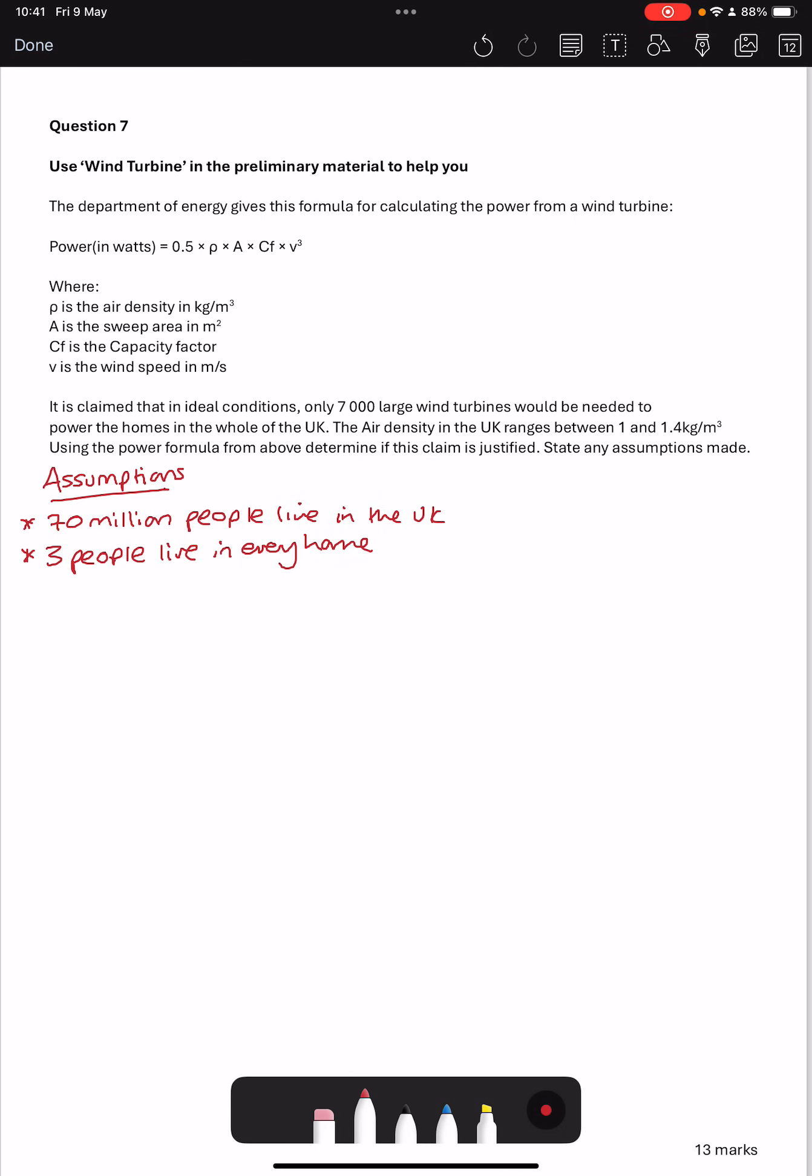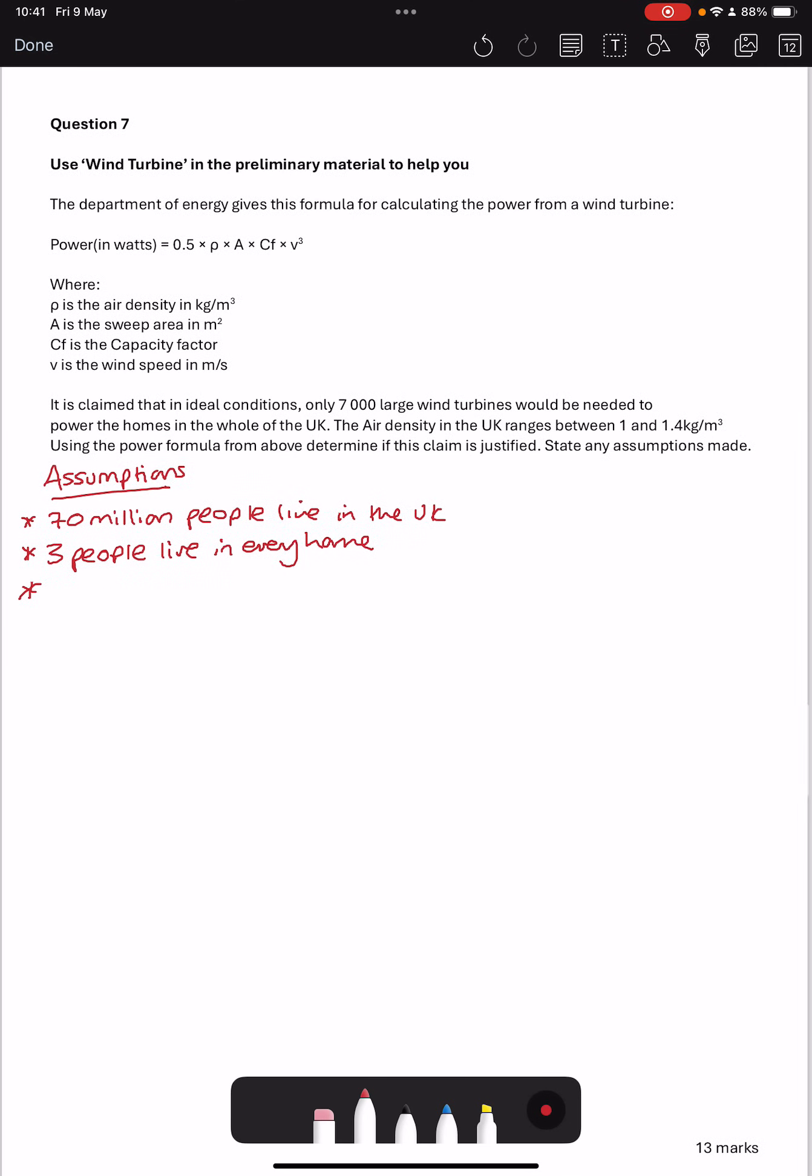Let's look at our formula and what we're going to have to use. The first thing is the air density. They've told us it's between 1 and 1.4, so I need to be clear what I'm going to use and I'm going to go right in the middle. So air density is 1.2 kilograms per metres cubed. Then I need the sweep area of these turbines. When I read the preliminary material, it said that wind turbines are getting bigger and bigger with the largest ones having diameters of over 200.